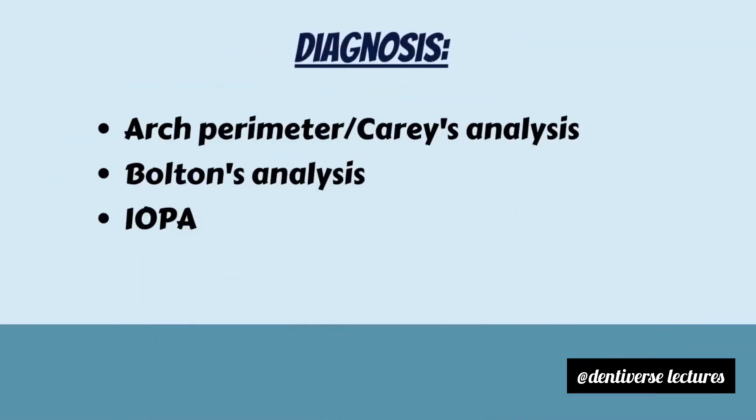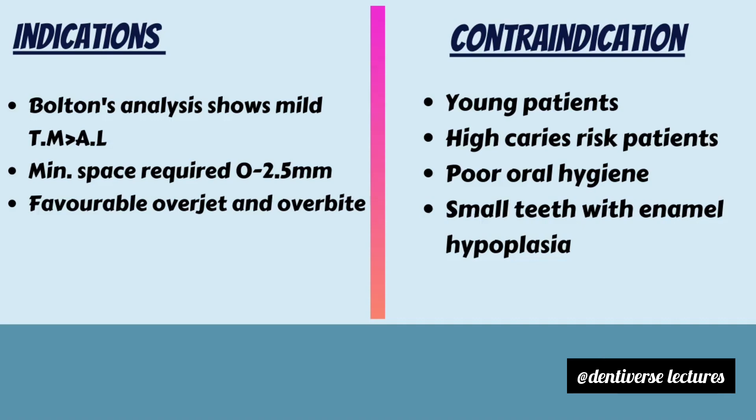Diagnosis can be made by arch perimeter or caries analysis, Bolton's analysis, and IOPA. Indications are: if Bolton's analysis shows mild tooth material excess, if minimum space is required from 0 to 2.5 millimeters so extraction is avoided in such mild cases.